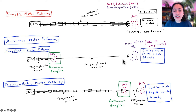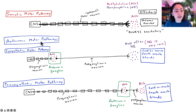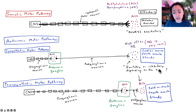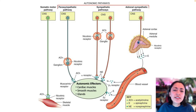One important distinction: the somatic motor pathway's effect on the target is always excitatory. Whereas norepinephrine and acetylcholine released by autonomic motor neurons can be either excitatory or inhibitory, depending on the type of receptor found on the target and on the type of target cell present.